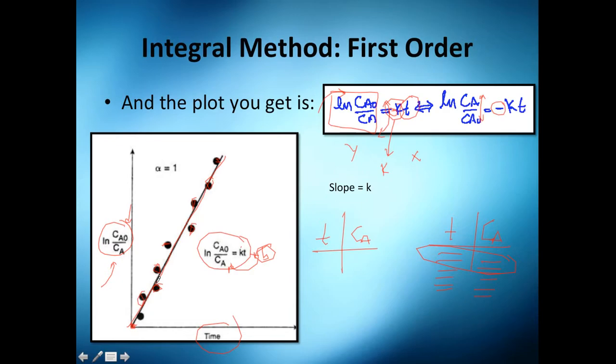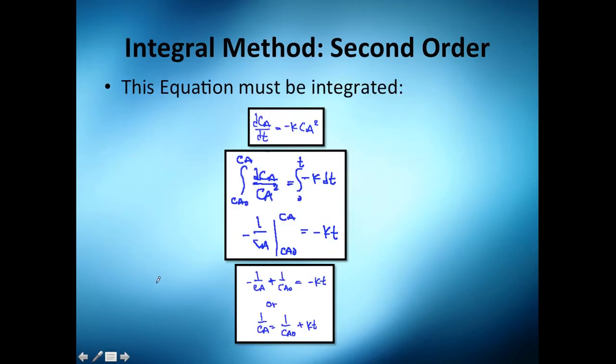So that's how we do a first order. And the last one will be second order. Here you have this equation right here, and then what we're going to do is essentially the same we did with the first order. The only thing here is the integration part. You don't get the natural logarithm.